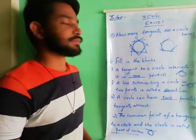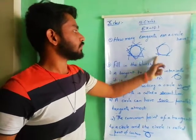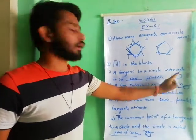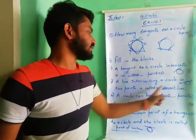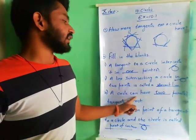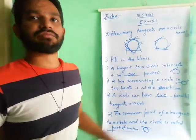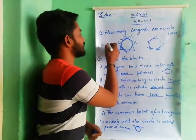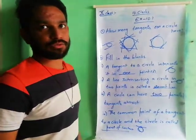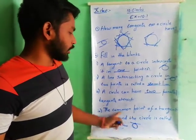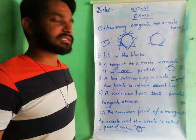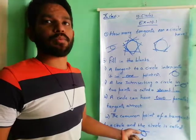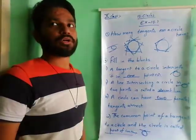To summarize: a circle has infinite tangents. A tangent to a circle intersects it at exactly one point. A line intersecting a circle in two points is called a secant. A circle can have two parallel tangents at most, at the ends of the diameter. The common point of a tangent and a circle is called the point of contact.